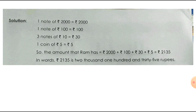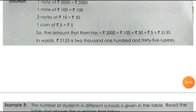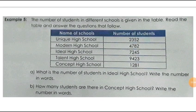Got it, children? So how can we write this in words? Rupees 2135 — we can write it as two thousand one hundred and thirty-five rupees.